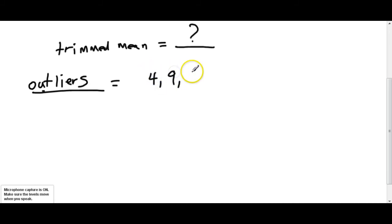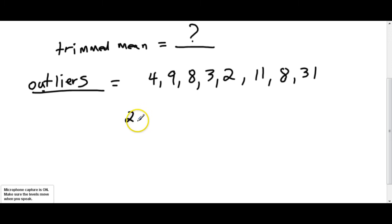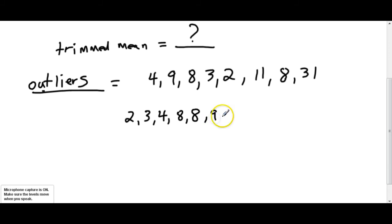Let's take a simple set of numbers: 4, 9, 8, 3, 2, 11, 8, and 31. We first want to put them in order, smallest to highest — ascending order. So we have: 2, 3, 4, 8, 8, 9, 11, and 31.